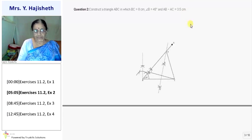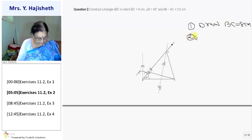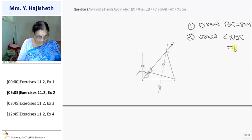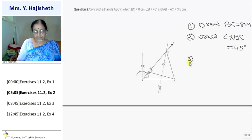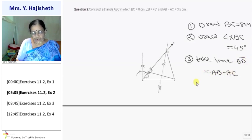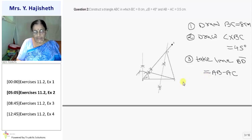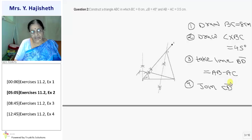In steps, first step: draw BC is equal to 8 centimeters. Here difference is given. Second point, after BC draw angle XBC is equal to 45 degrees, make 90 degree angle bisector. Third point, draw line segment BD equal to AB minus AC, that is 3.5 centimeters. Joint CD.